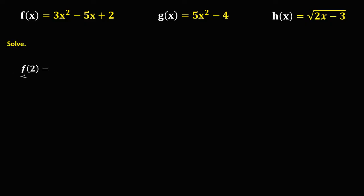Since f(2), from f(x) but x is equal to 2. Substitute 2 into this equation, so this becomes 3 times 2 to the power 2, because x is equal to 2, then minus 5 times 2, then plus 2.